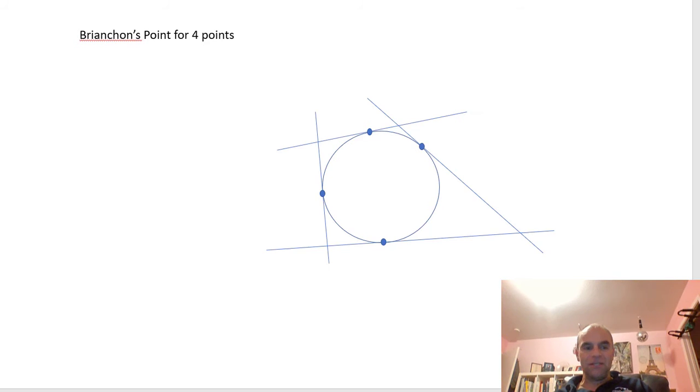So I'm going to start by drawing the tangent line at all four points. There they are. And we can look at where these tangents intersect.